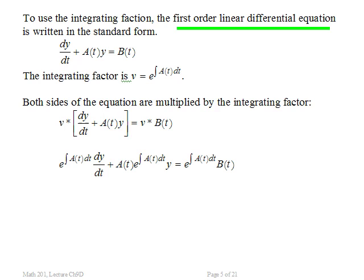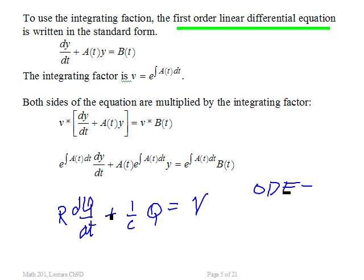Let me write those equations here just so you can remember that they do indeed look like that. I had R dQ/dt plus 1 over C times Q equals the voltage. So here we have ordinary differential equations because you only have one variable, one independent variable, and that is time.